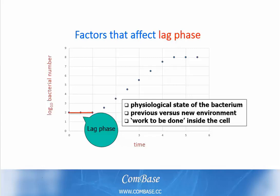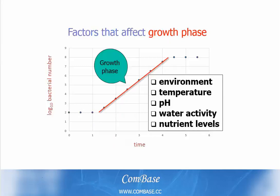The factors that influence the lag phase include the physiological state of bacteria. For example, the previous environment may have had a lower water activity before the cells entered a new environment with a higher water activity. The time required for the cells to begin replicating is a reflection of the work to be done — the metabolic changes and genetic expressions that must occur when they move from one environment to the other.